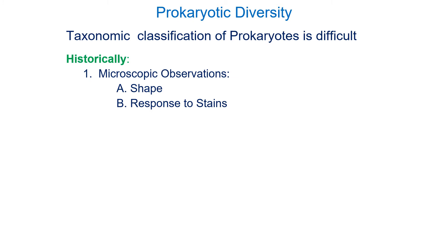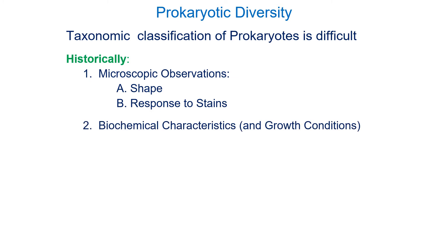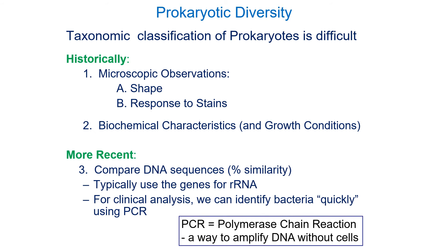Classifying prokaryotes is difficult. Historically, we could look at them under the microscope, noting their shape, and expose them to different stains to see which stick. We could also look at biochemical characteristics — whether bacteria can break down certain nutrients, or live in anaerobic environments, for instance. More recently, we can look at DNA sequences, which is typically the most promising approach. One technique to amplify DNA for comparison is PCR, the polymerase chain reaction; we have a thermocycler in the lab that you'll have a chance to see.